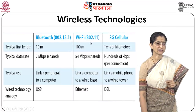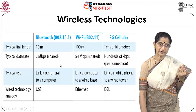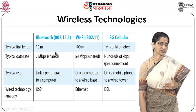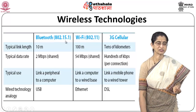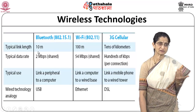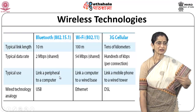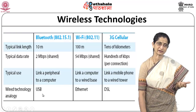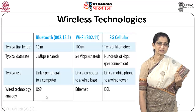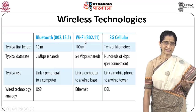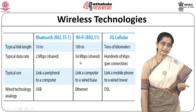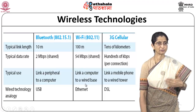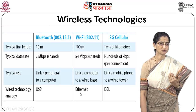Looking at common wireless technologies depending on range and data rates: Bluetooth is used for short ranges of about 10 meters, supporting 2 Mbps data rates, typically to link a peripheral to a computer — the wired analogy being USB. Wi-Fi is a wireless LAN covering up to 100 meters, with about 54 Mbps shared data rates, used to link a computer to a wired base — the wired analogy being Ethernet.